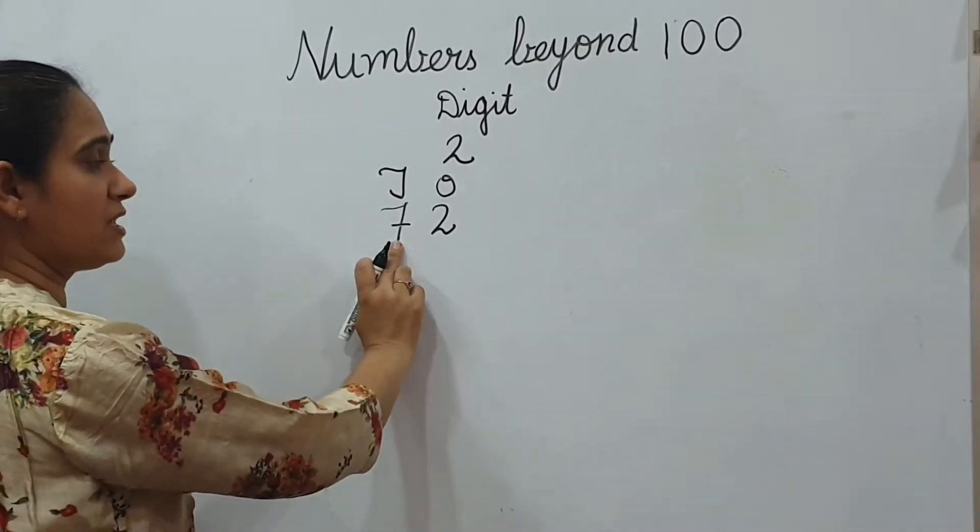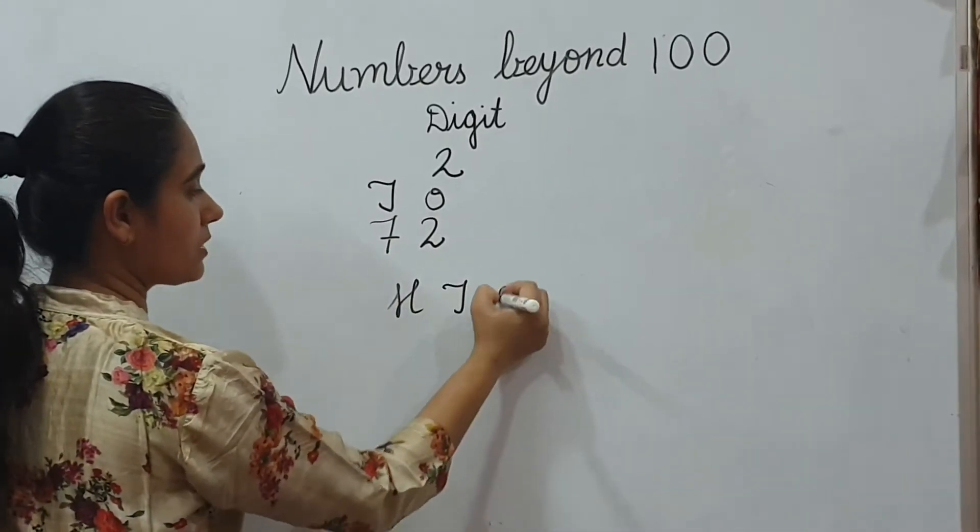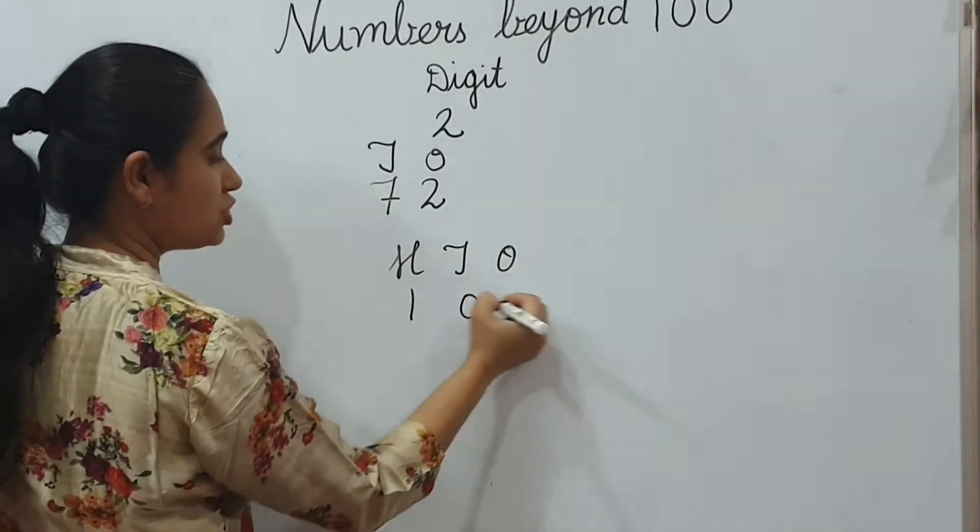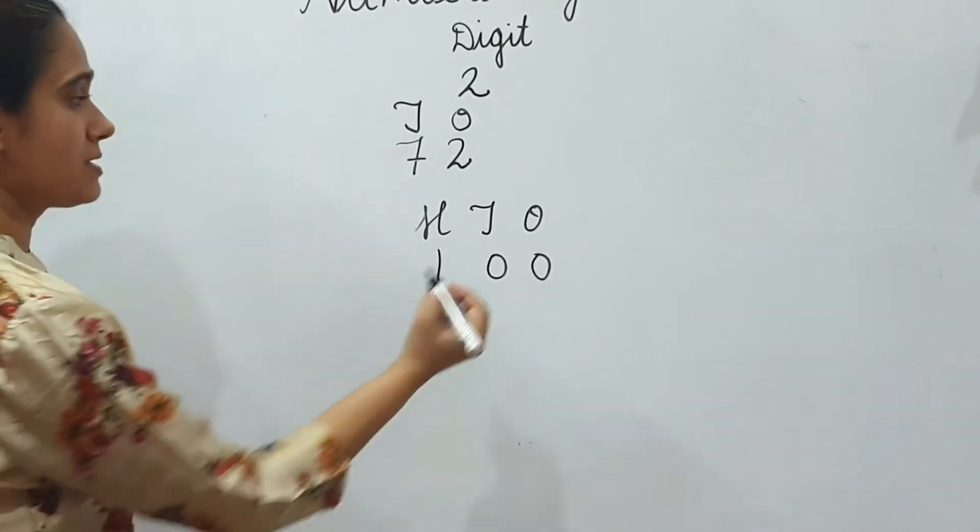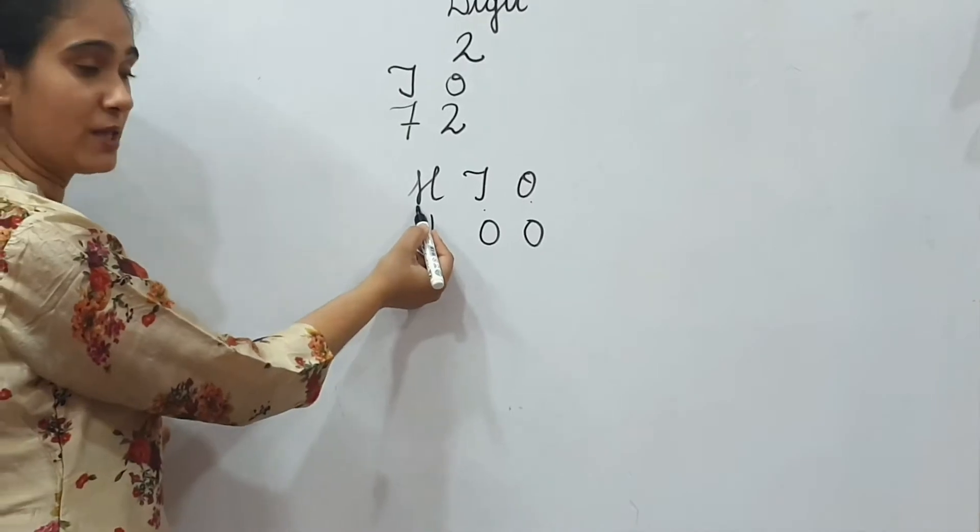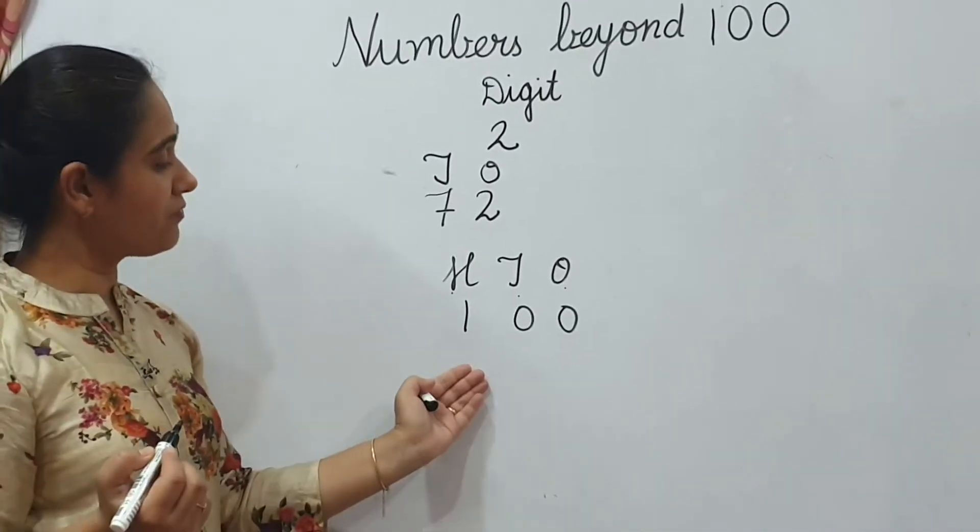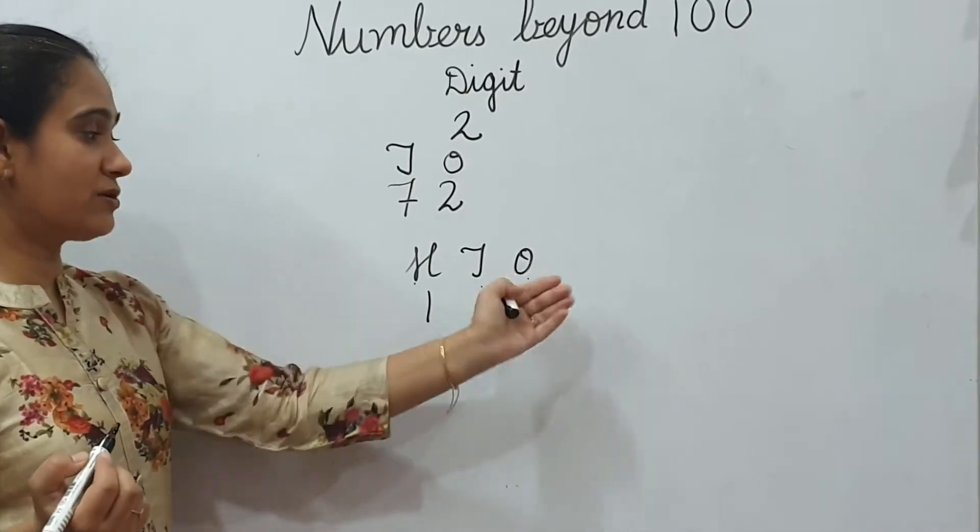Now, how we will speak it? Can you speak this? What is this? 1, 0, 0. This is 1's place. This is 10's place. This is 100 place. How we will speak this? 100. What you will say? 100.